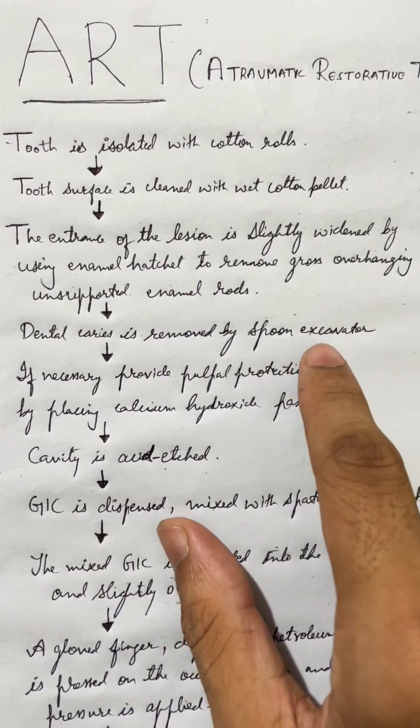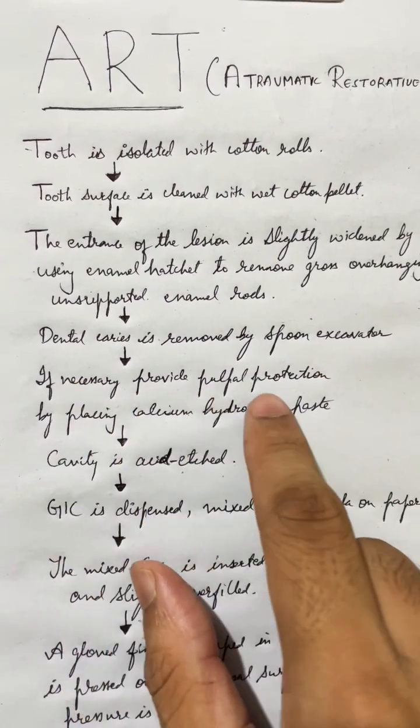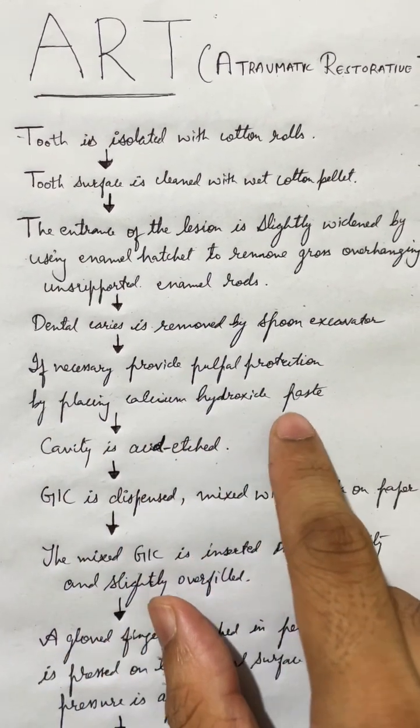Dental caries is removed by spoon excavator. If necessary, provide pulpal protection by placing calcium hydroxide paste.